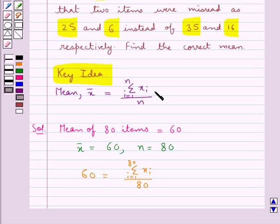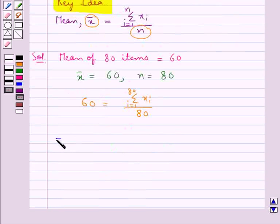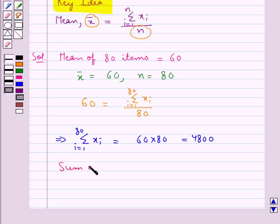Substituting the values for x̄ and n in the formula for mean, this gives us Σxi (i = 1 to 80) = 60 × 80 = 4800. This means the sum of 80 items equals 4800.